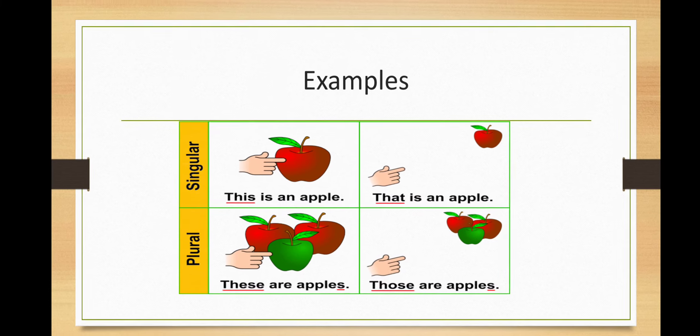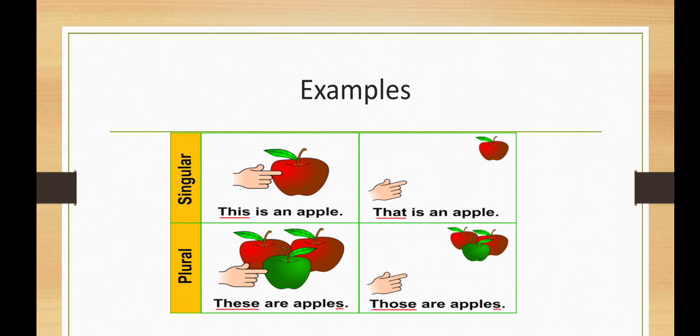Examples. Singular: this is an apple, that is an apple. Plural: these are apples, those are apples.